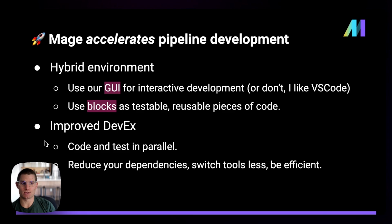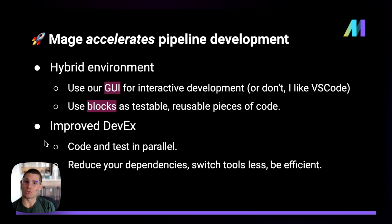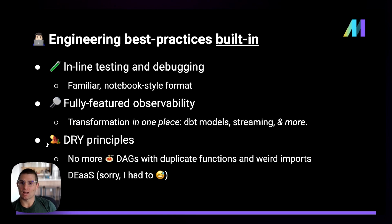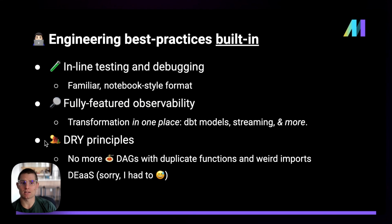Blocks being testable, reusable pieces of code make them ideal for software engineering best practices. Through this design philosophy, we are improving the data developer experience with Mage — because it allows you to code and test in parallel, and it allows you to reduce your dependencies, maybe only using one or two tools instead of five or six. Mage has a lot of engineering best practices built in: you can test inline and debug inline using a familiar notebook-style format. There's fully featured observability capability, including integration with dbt for a complete lineage, complete view of your data pipelines — streaming pipelines, batch pipelines, data integration pipelines, and a lot more. These concepts around blocks allow you to utilize DRY principles — don't repeat yourself in engineering speak — which help minimize messy spaghetti-style DAGs that we might see in Airflow, and even implement something like data engineering as a service.